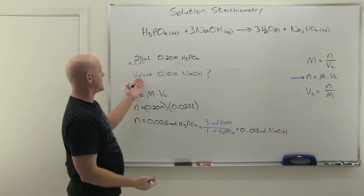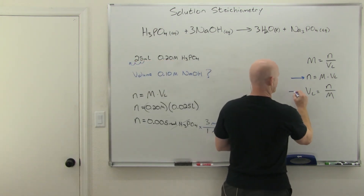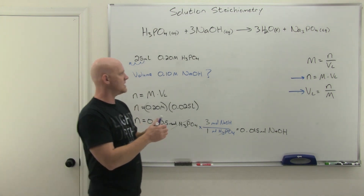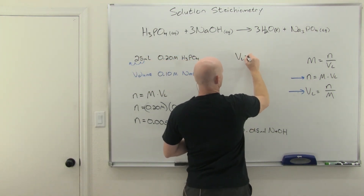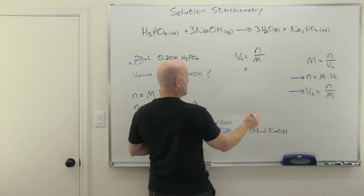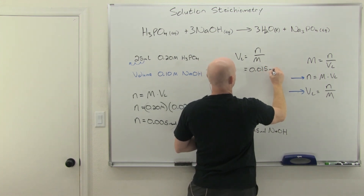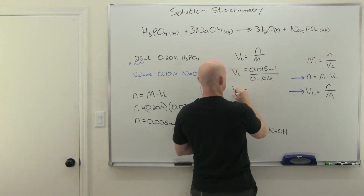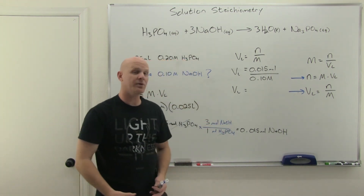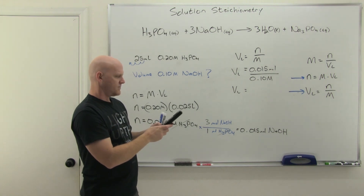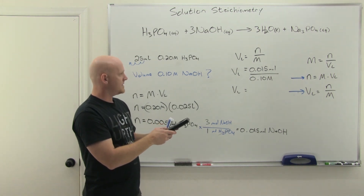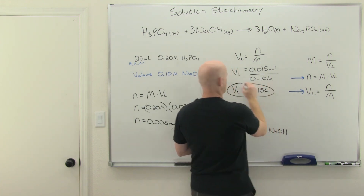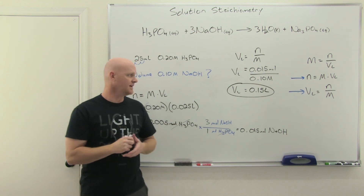Last step: the question asks for the volume of NaOH. Volume = moles / molarity = 0.015 / 0.10 = 0.15 liters, which is the same as 150 milliliters — exactly what we estimated from the start.